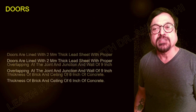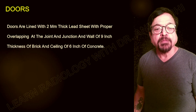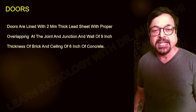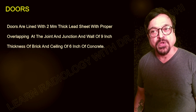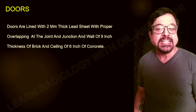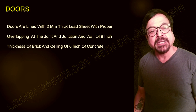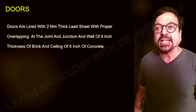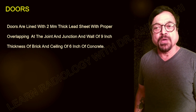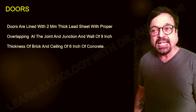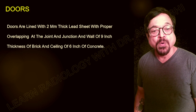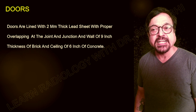Doors are also important. Patients should not be opening the door during an exposure — the door has to be locked when radiation is being generated. The doors are lined with 2 mm thick lead sheets with proper overlapping at the junction, along with 9-inch thick walls. Proper overlapping is critical; otherwise, gaps will result in leakage of radiation.